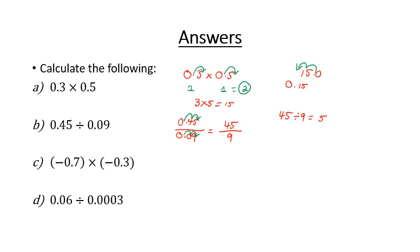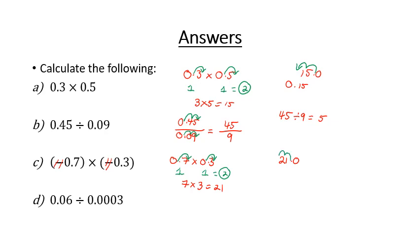In our third question, remember that a negative times a negative gives a positive, so we can cancel out the negatives and we just end up with 0.7 multiplied by 0.3. Moving the decimal place one spot on each number gives us a total of two spots moved, and whole numbers of 7 multiplied by 3. We know 7 times 3 is 21, and since we've moved the decimal place two spots to the right in total, we move it two spots back, giving us 0.21.